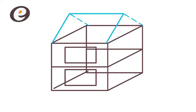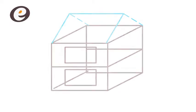Identify and reduce thermal bridging. Whilst calculating psi values for each thermal bridging junction may incur a cost, using accurate values instead of defaults can greatly reduce the DER.